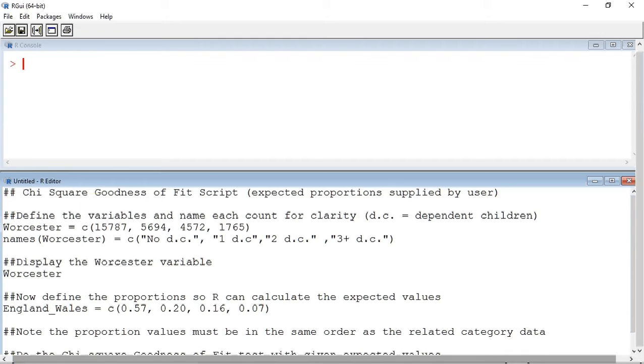So let's run the script. First I click at the beginning of the first line of the script. I'm going to run the script one line at a time. To do this in Windows or Linux you need to press CTRL R. If you're using a Mac you need to press CMD OPTION R. We can see each line appears in the R console window.